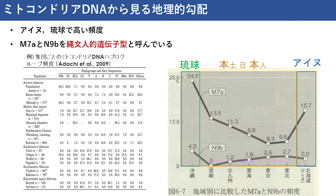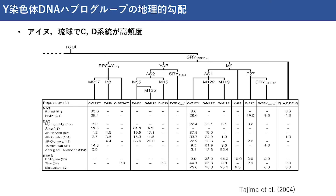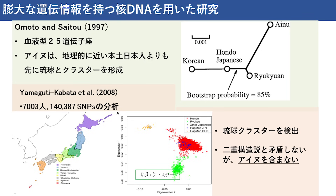ミトコンドリアDNAのハプログループは縄文人的遺伝子型と呼ばれています。縄文人のミトコンドリアDNAを分析した足立ら2009年によりますと、北海道の縄文人でN9bが高頻度で見られ、またM7aも検出されています。このような地理的な勾配はミトコンドリアDNAに限らずY染色体でも報告されています。現代の日本列島においてハプログループDのタイプがアイヌおよび沖縄で高頻度で見られています。